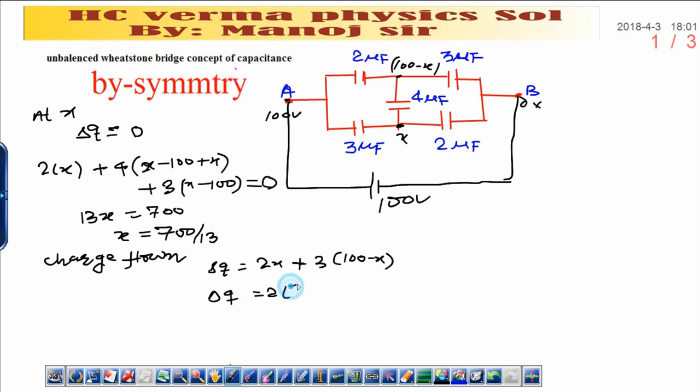2 into 700 upon 13 plus 3 into 100 minus 700 upon 13, divided by... That means to calculate the net capacity between A and B in this complicated circuit.